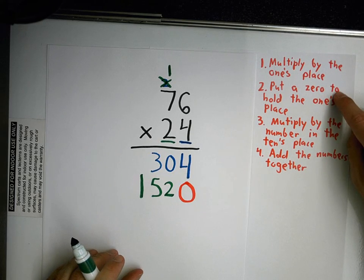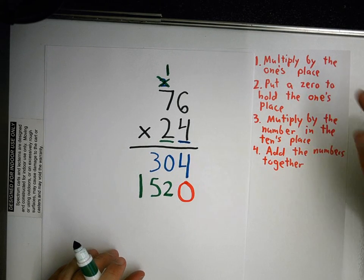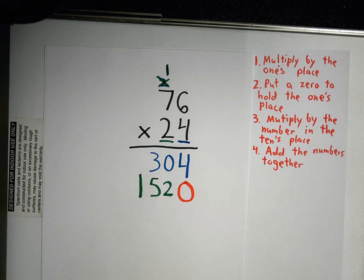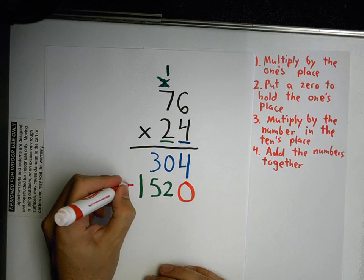So look. I put a 0 to hold the 1's place. I multiplied by the number in the tens place. What do I need to do now? I'm still not done. I have two numbers. But I'm not done yet. Simeon. Add it up. Add it up. So I'm putting a plus sign.